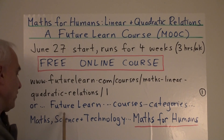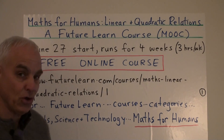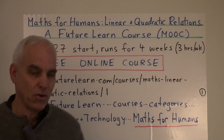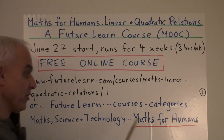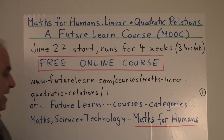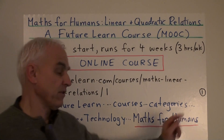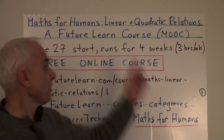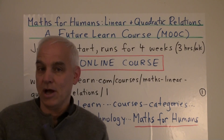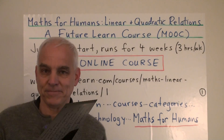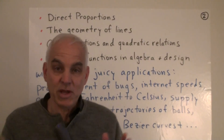There's an official URL, but it may be easier to just Google FutureLearn. There'll be a button to see all the courses across various categories. Under Math, Science and Technology, you'll find Maths for Humans: Linear and Quadratic Relations about to start — just enroll and off you go.